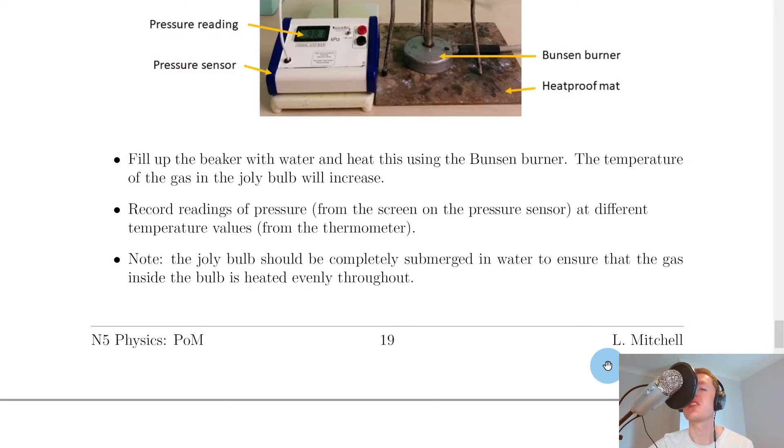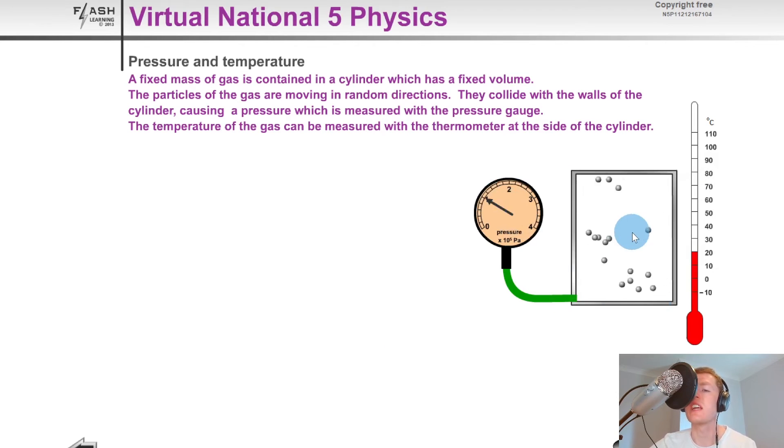I'm just going to show you a quick simulation to help you visualize how you would do this experiment. So here you can see we've got gas inside a container and we've got a pressure gauge and a thermometer i.e. a temperature scale. So if we were to increase the temperature of our gas from 20 to 30 say you can see that our pressure increases. If we go from 30 to 40 you'll see the pressure keeps increasing and so on. So you could increase your temperature say in steps of 10 degrees Celsius and you could note down the pressure reading on the pressure gauge. So you can clearly see that as I keep increasing the temperature here the pressure increases as well.